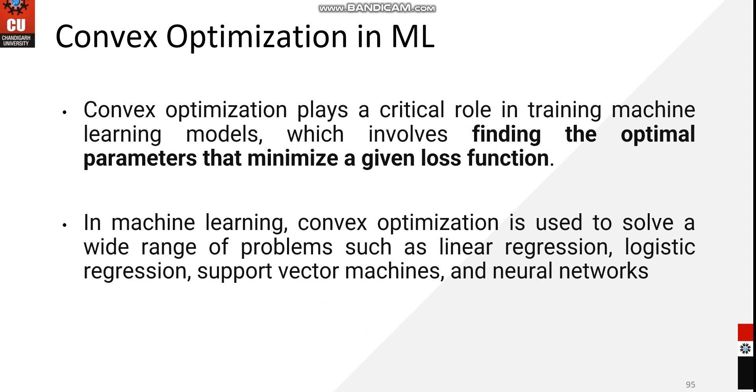Convex optimization plays a very critical role in training machine learning models, which involves finding the optimal parameters that minimize the given loss function. We will firstly discuss a small function.